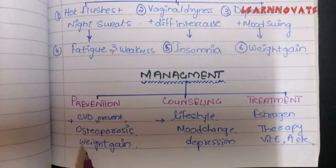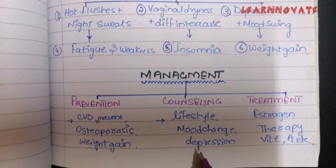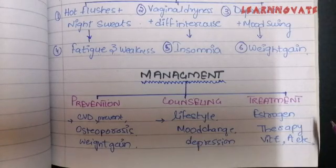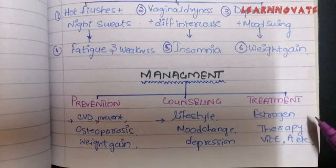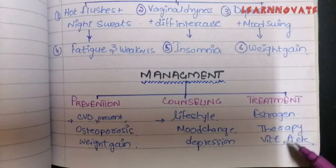These conditions can be prevented through lifestyle changes, and these lifestyle changes can be addressed through counseling — we can counsel for lifestyle changes and for depression and mood. If the menopause is severe and the female is having much difficulty, we can treat it with estrogen therapy or different antioxidants like vitamin E and vitamin A.